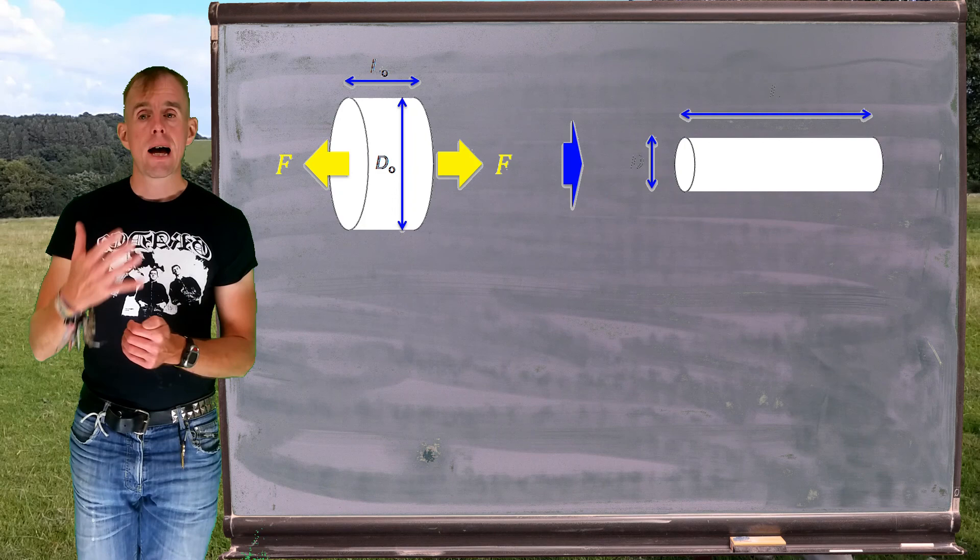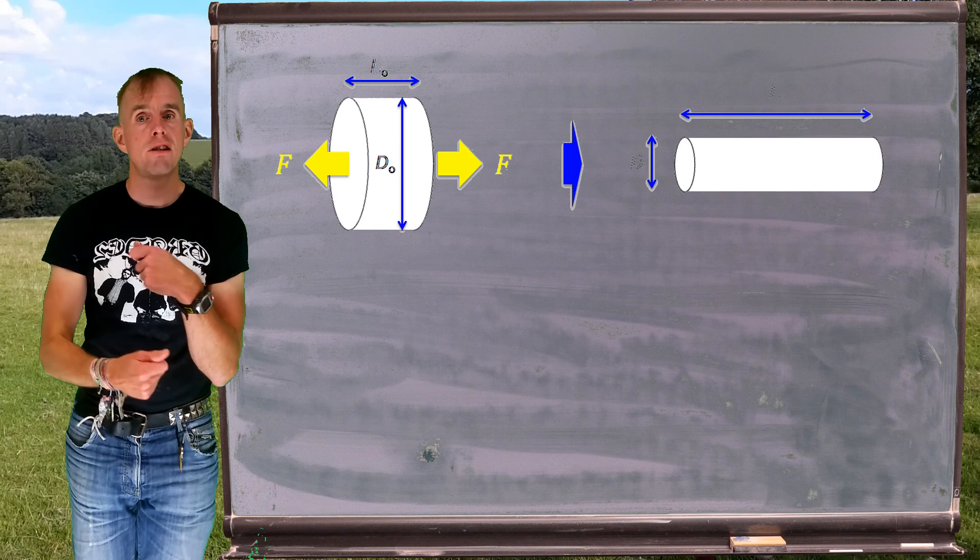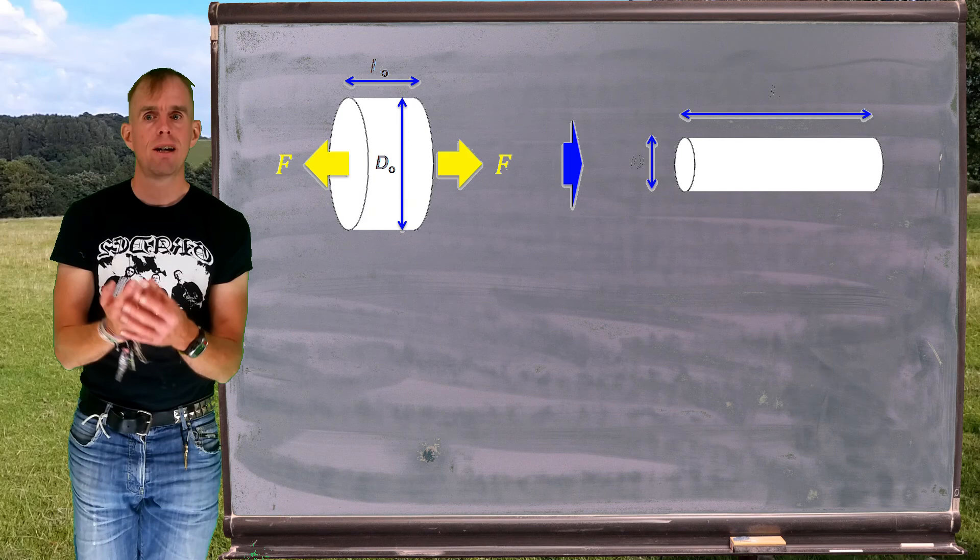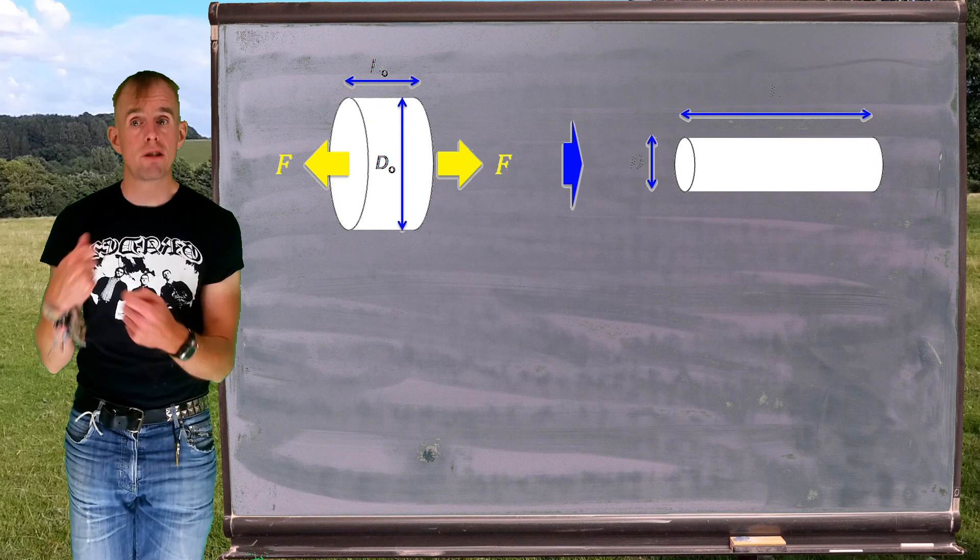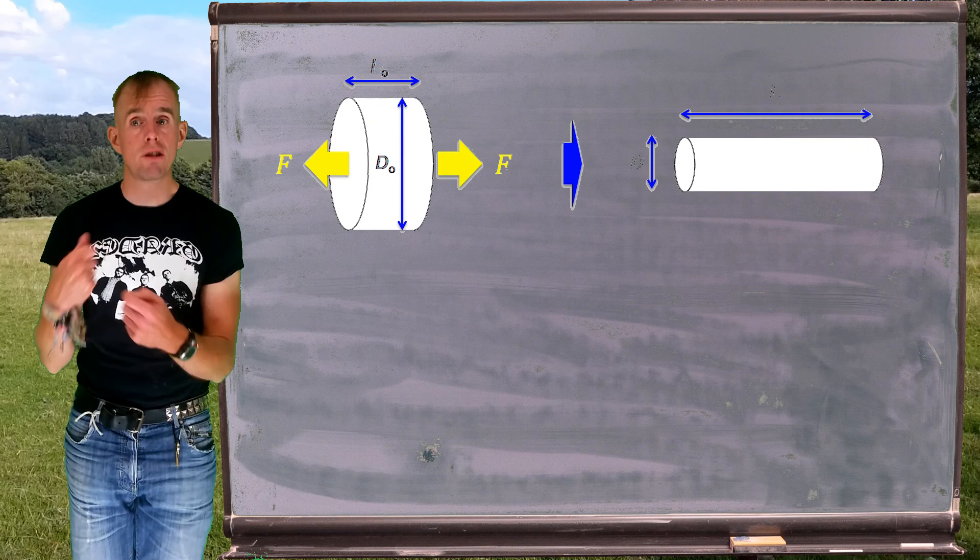And we know from lecture one that we can work out the relationship between the length increase and the diameter decrease by consideration of the strain rate tensor. This is a strain rate tensor for an extensional deformation. It only has terms on the principal diagonal and we can use that knowledge along with continuity to figure out how d relates to L.